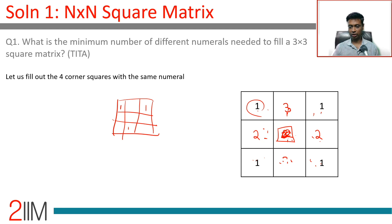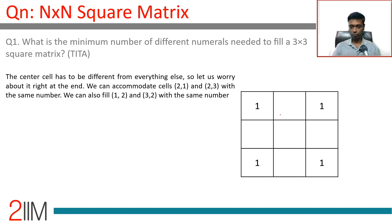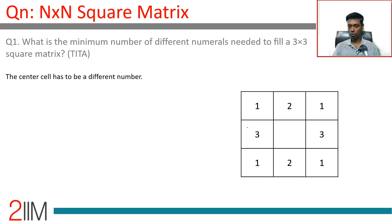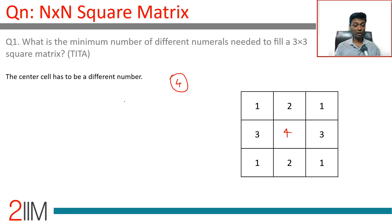We can have the four corners as 1, the four edge cells as pairs of 2 and 3 alternating, and a 4 in the middle. So with four numerals we can fill the 3×3 grid. The minimum number of different numerals needed appears to be four.